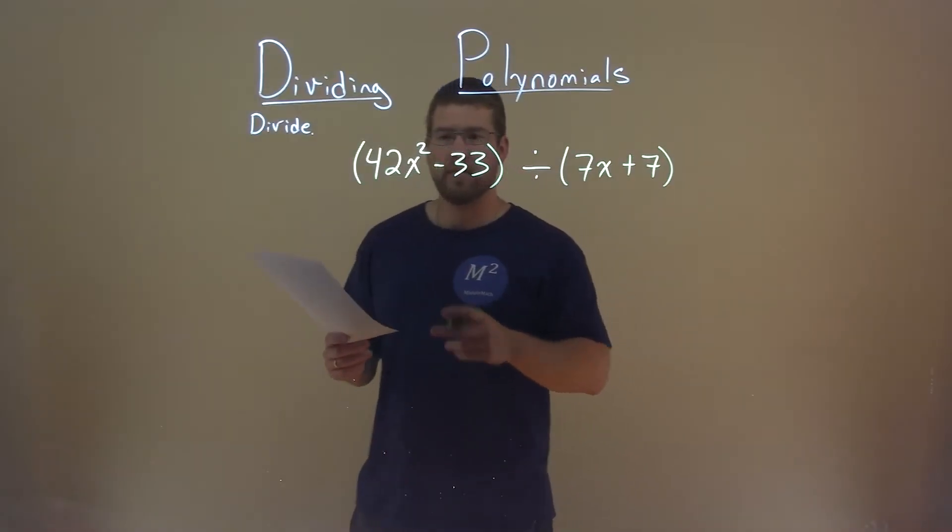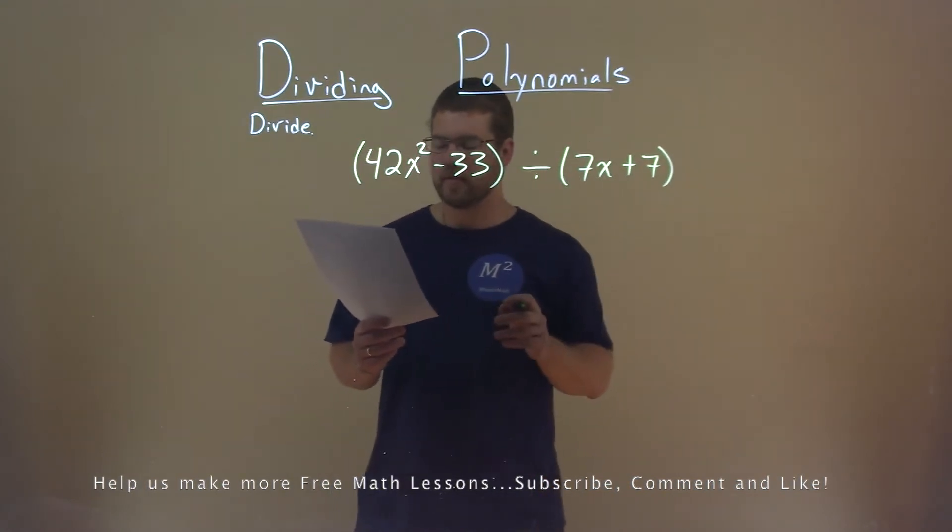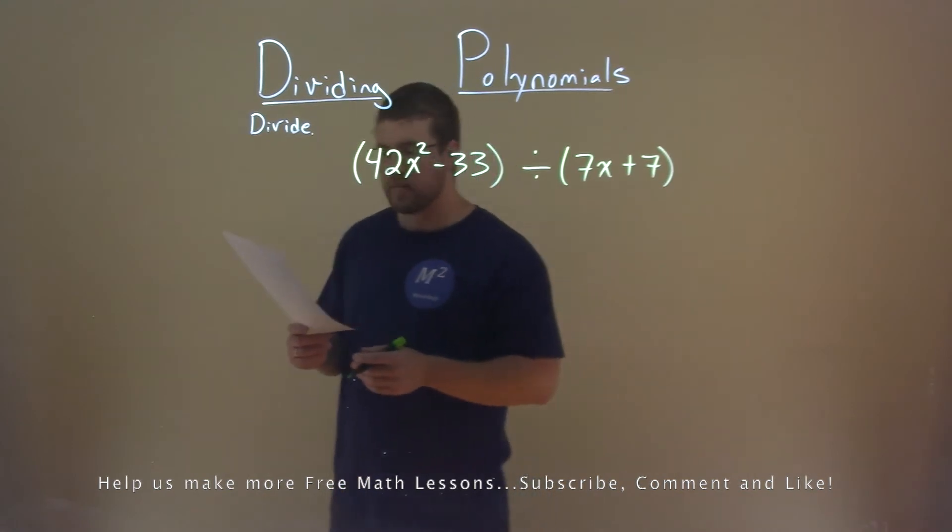We're given this problem right here, 42x squared minus 33 divided by 7x plus 7, and we need to divide these two. Let's go set up some long division.